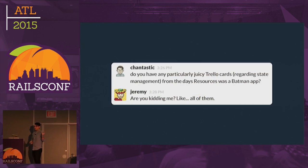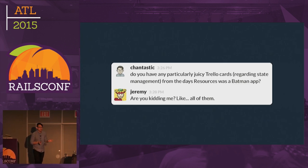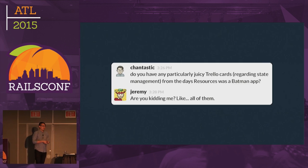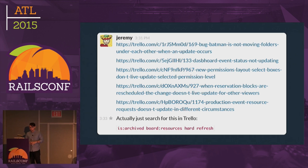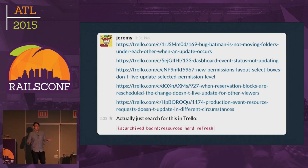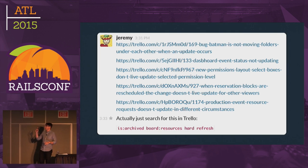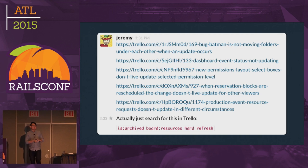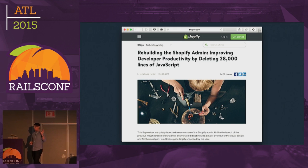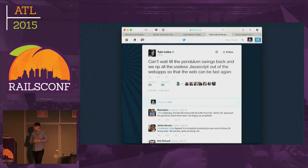I asked the product manager for that team: do you have any particularly juicy cards where state was just unbearable in our Batman app and was kind of solved when we moved it back to just Rails? He said, are you kidding? All of them. He proceeded to send eight cards and eventually gave up and said, just search for cards that have 'hard refresh' in them. So we had parts of our app that were so unreliable that the best solution was to just say, if a user ever comes to this route, it's probably not going to work — let's just refresh it. That's ridiculous. Shopify kind of abandoned Batman.js in 2014, and we were kind of left holding its hand. They've actually been pretty vocal against client-side MVC since then.